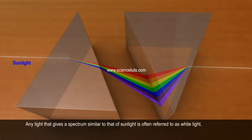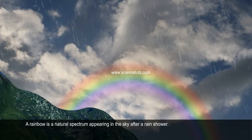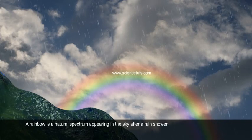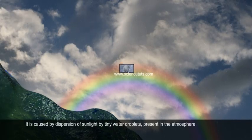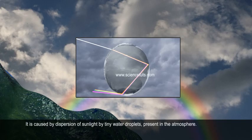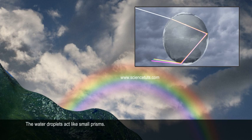Any light that gives a spectrum similar to that of sunlight is often referred to as white light. A rainbow is a natural spectrum appearing in the sky after a rain shower. It is caused by dispersion of sunlight by tiny water droplets present in the atmosphere. A rainbow is always formed in a direction opposite to that of the sun. The water droplets act like small prisms.